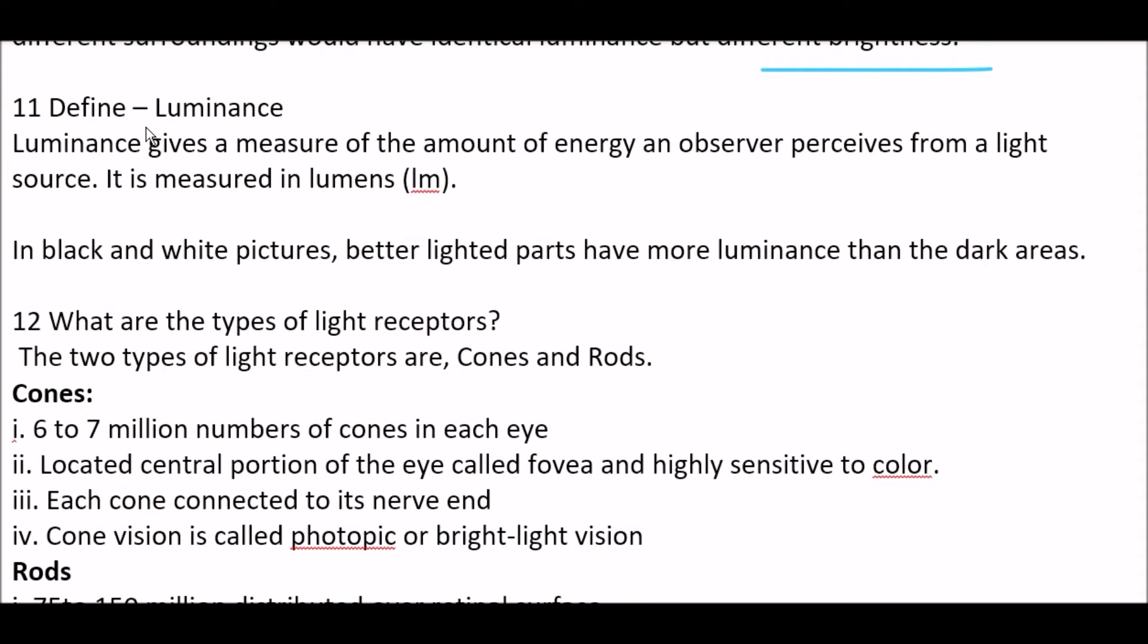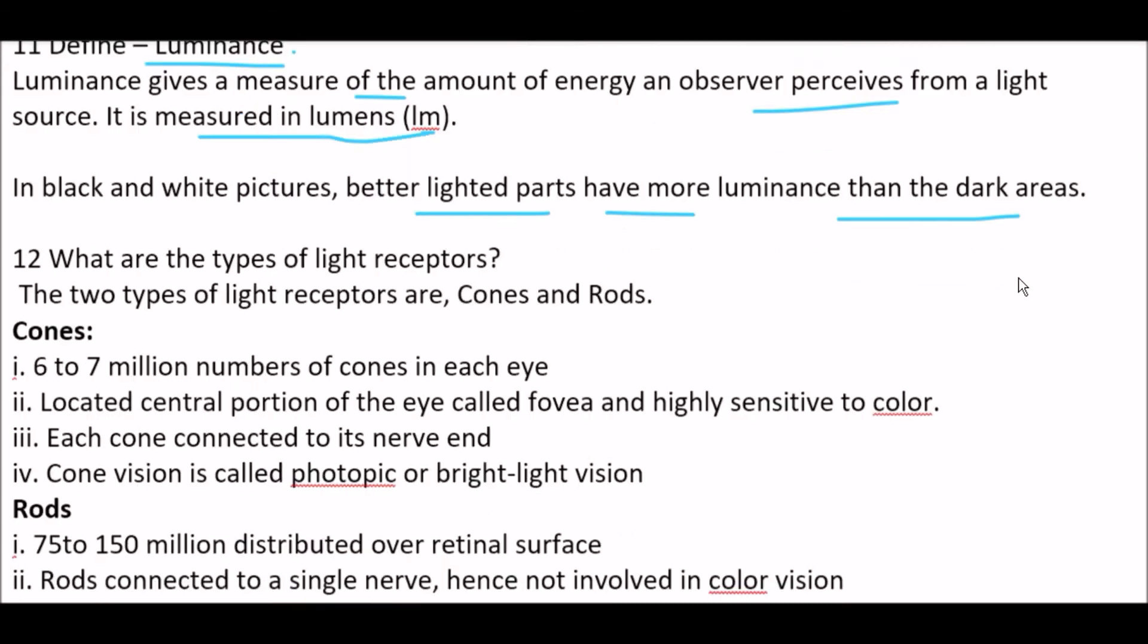Next question. Define luminance. Answer is, luminance gives a measure of the amount of energy an observer perceives from a light source. It's measured in lumens. And in black and white pictures, better lighted parts have more luminance than the dark areas.